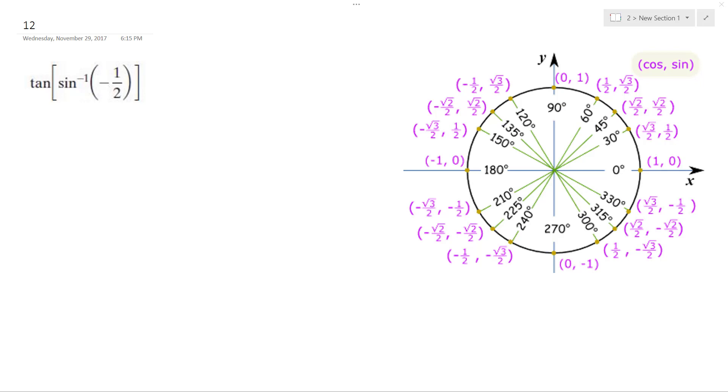All right, so we want to find the tangent of the inverse sine of negative 1 half. The inverse sine is bound between negative pi over 2 and pi over 2.